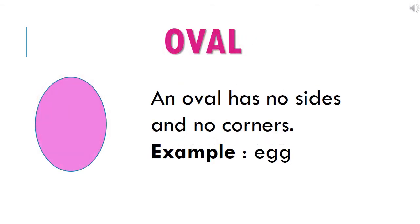This is an oval. An oval has no sides and no corners. The example of an oval is egg.